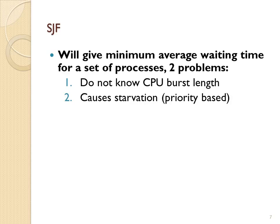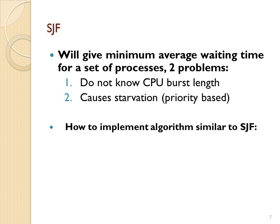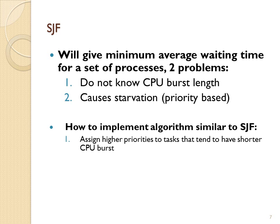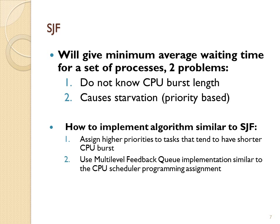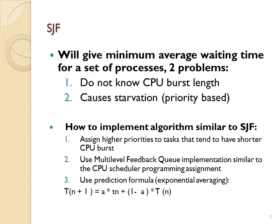There are some ways to implement algorithms similar to Shortest Job First. First, you could assign higher priorities to tasks that tend to have shorter CPU bursts. Second, you could use a multi-level feedback queue implementation — we will cover that in the CPU scheduler programming assignment. Third, you could use what is called the prediction formula, which uses exponential averaging of previous bursts to predict the future.